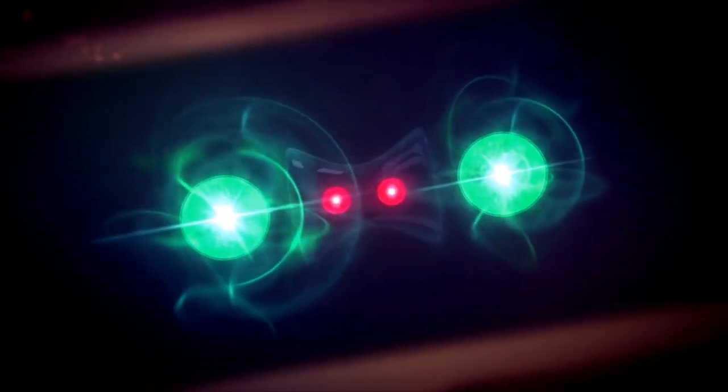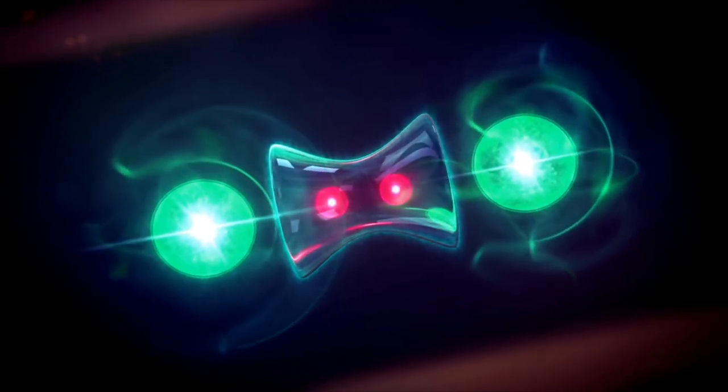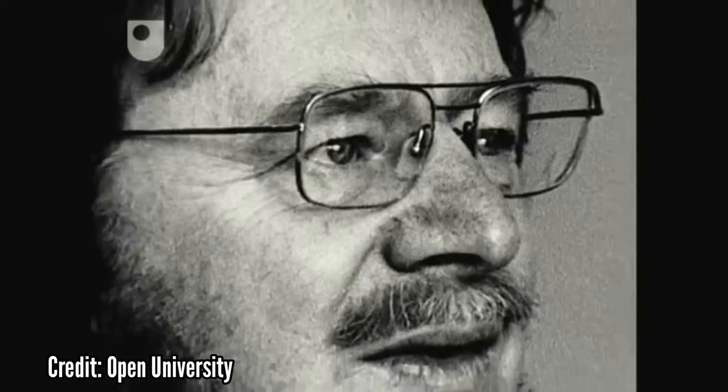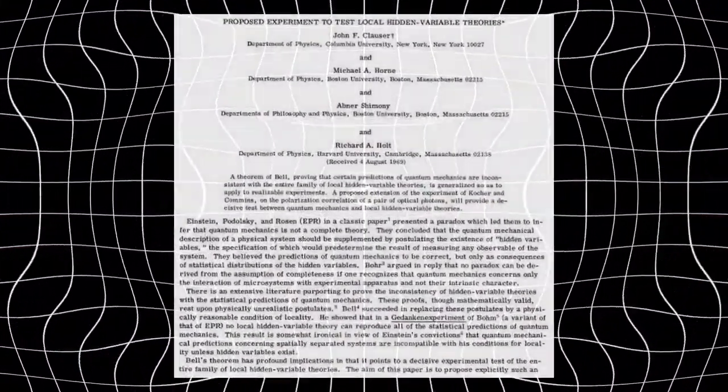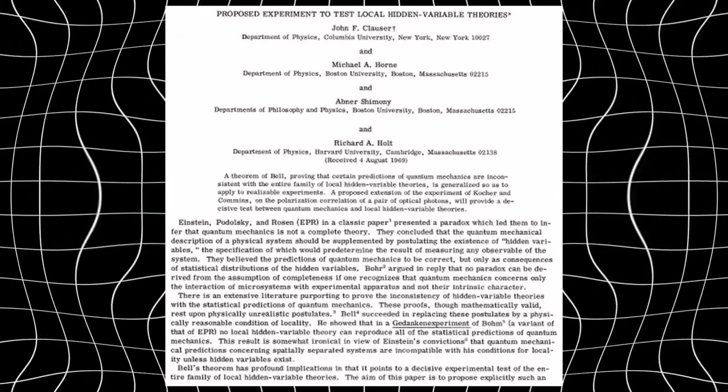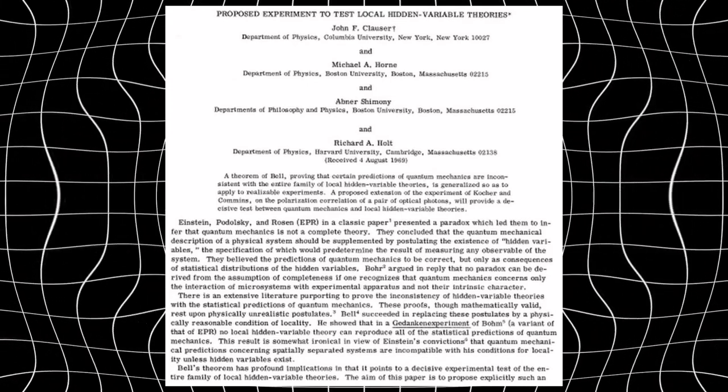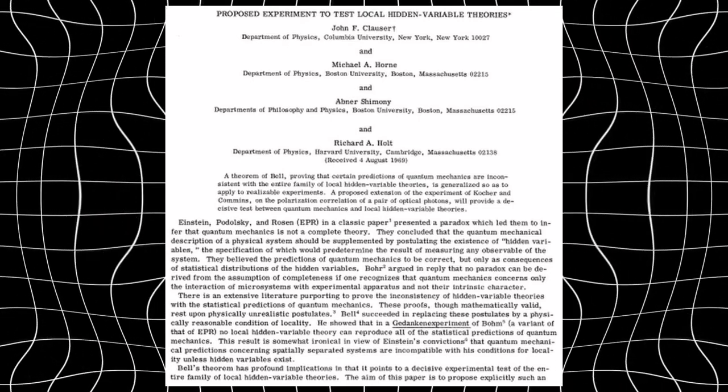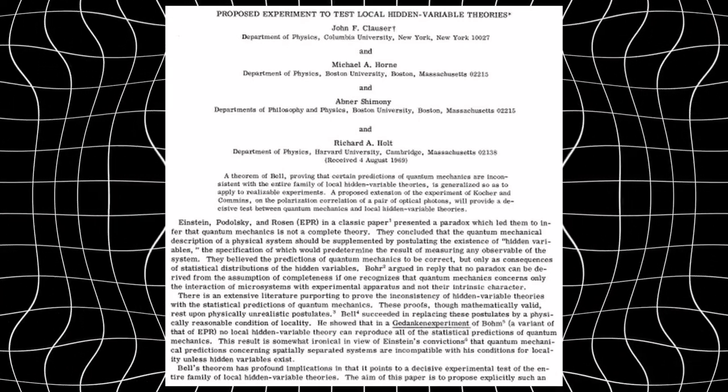To arrive at a logically correct argument against local hidden variables, one has to supplement the strong original Bell inequalities with additional assumptions which allow calculating the necessary correlation coefficients from the measured coincidence count rates. Such modified weak inequalities as derived by Clauser, Horn, Shimonie, and Holt were then used in most experiments to interpret the data.